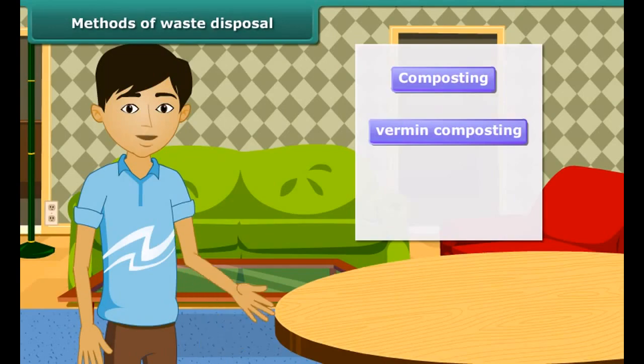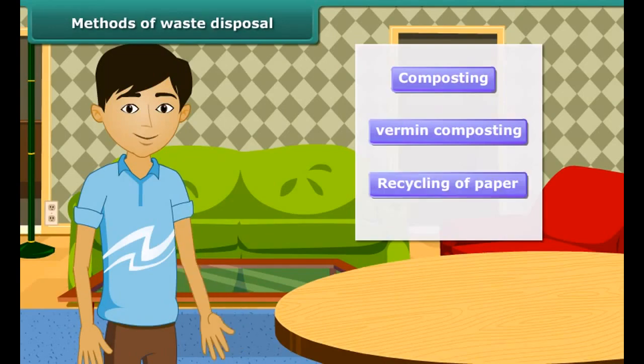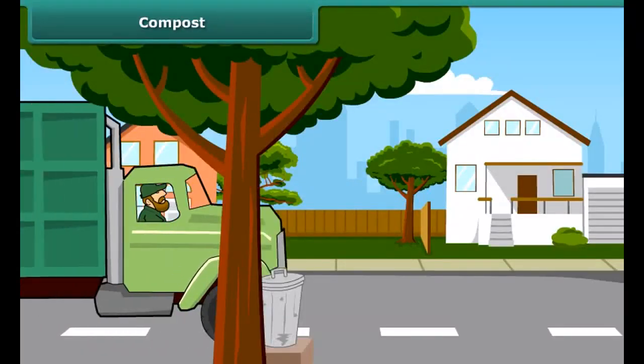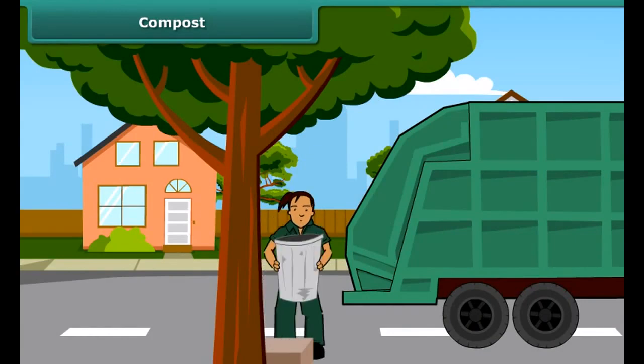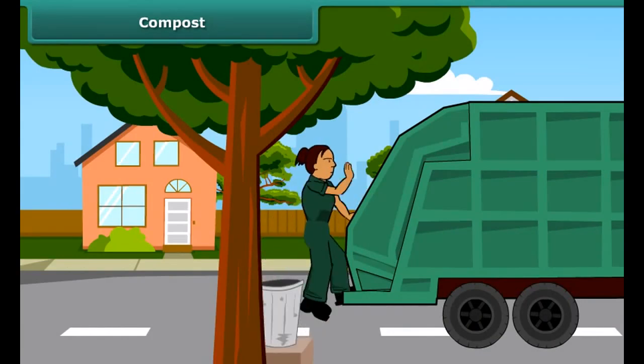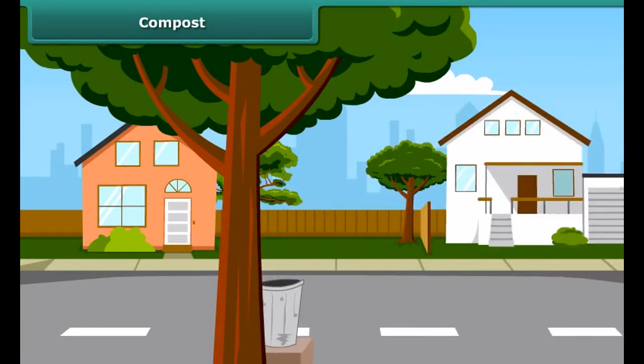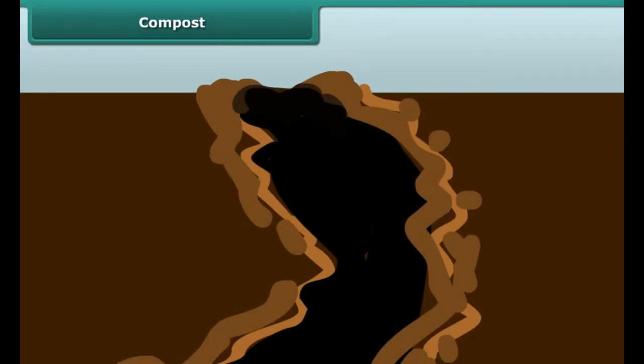When we peel off fruit and vegetable skin, it is necessary to dispose of it in a dustbin. Careless lying garbage attracts disease-causing insects.